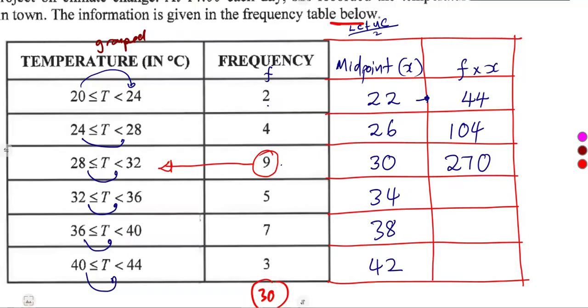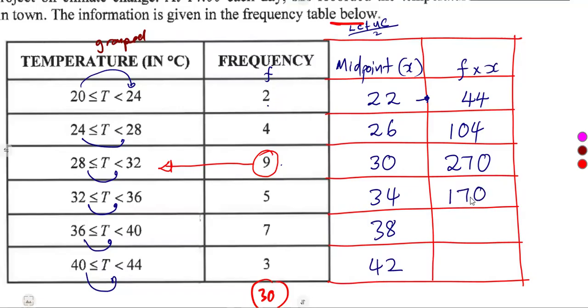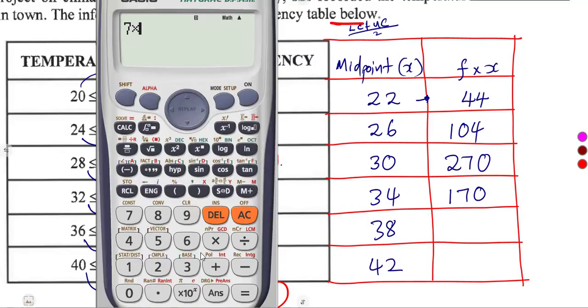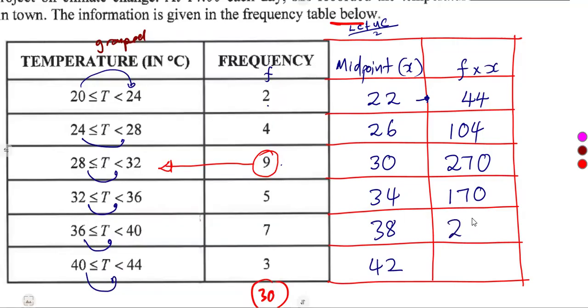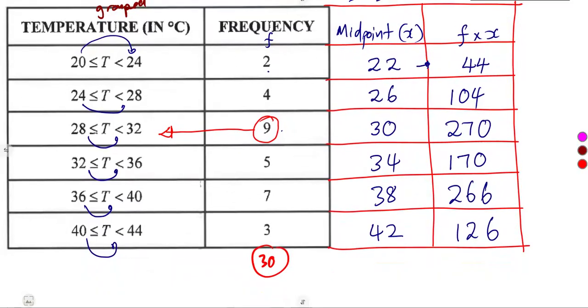5 and 34, which is going to give us 170. Then 7 and 38, which is 266. 3 and 42, that's 126. So that is what you're going to need. And the sum, add everything from this column of frequency. You add everything, that's going to give us 980.